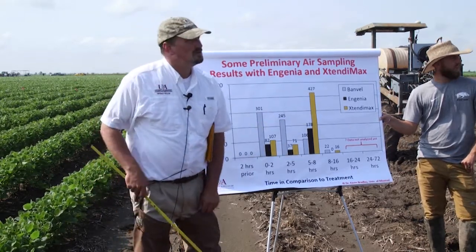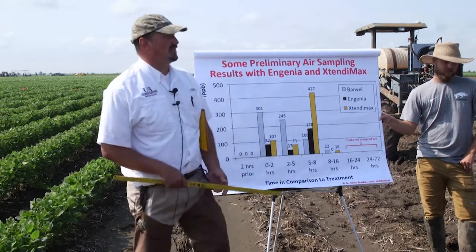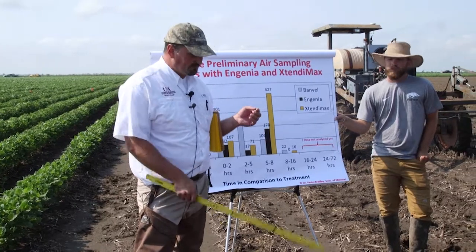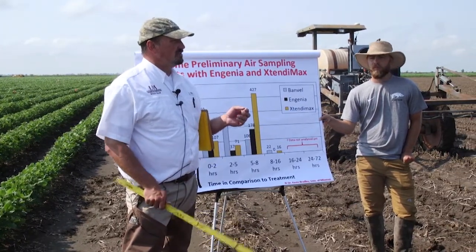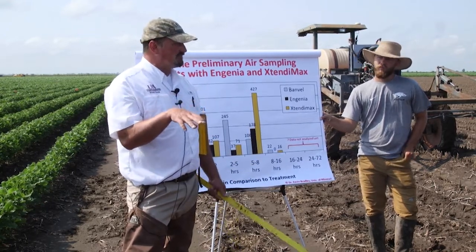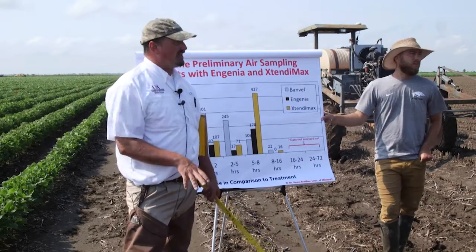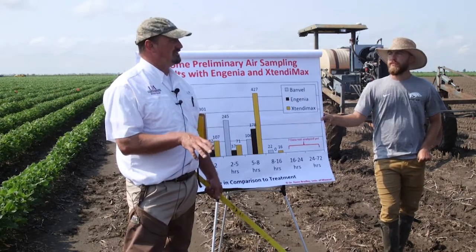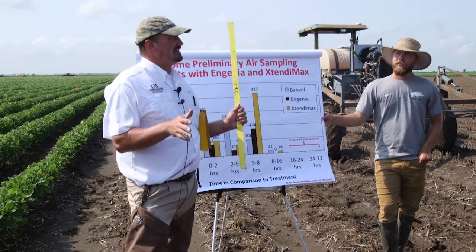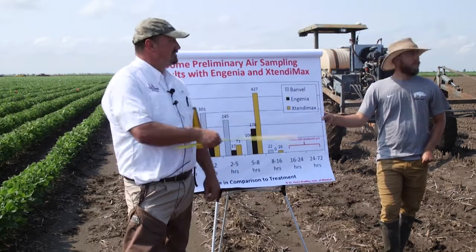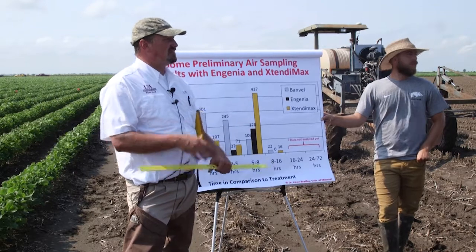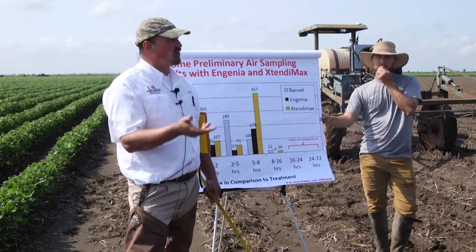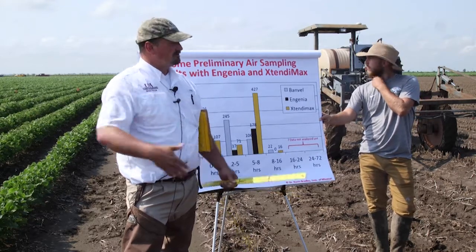Regarding the impact of rainfall after application: based on what I've seen — going back to 2015 — the KOC of dicamba, its ability to bind to soil, is extremely low. So if we have measurable rainfall — half an inch or more — you're going to drive that herbicide into the soil. Once you do that, I believe the ability for it to volatilize is substantially reduced. The 2015 data indicated that a rainfall event six hours after application had a strong effect on our inability to observe volatility at distance.